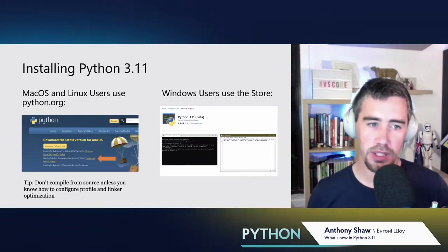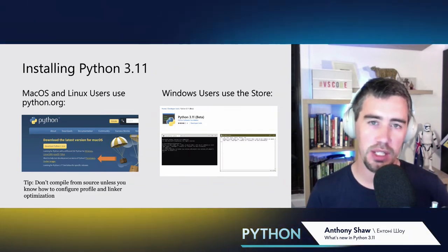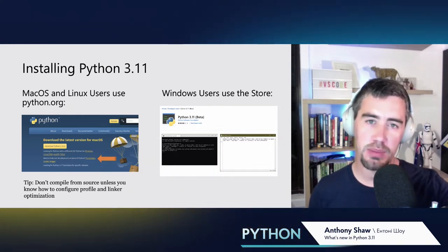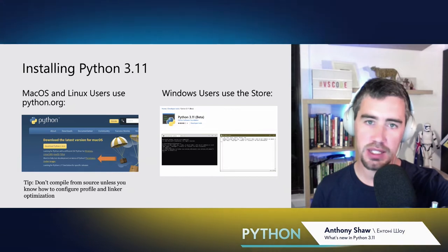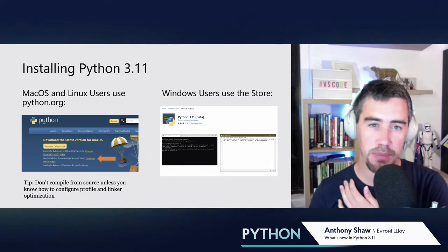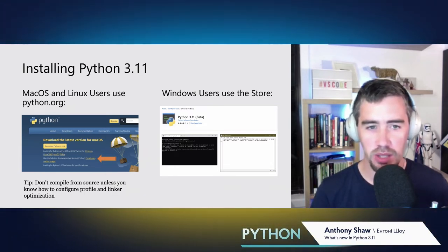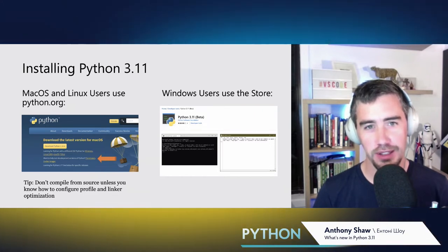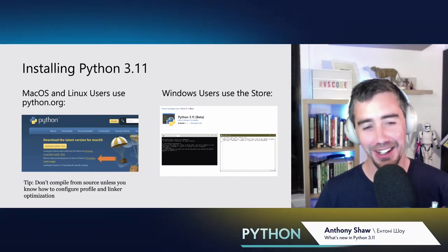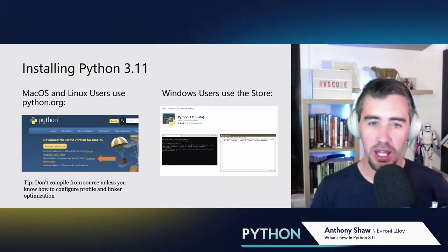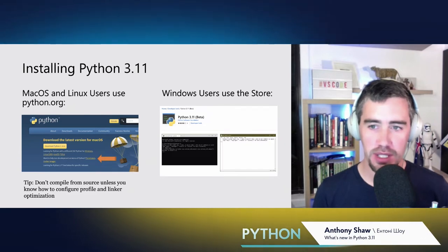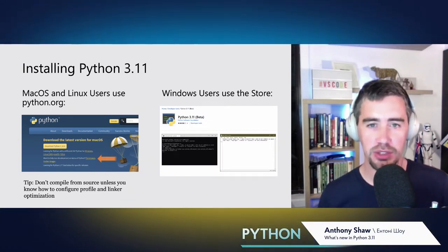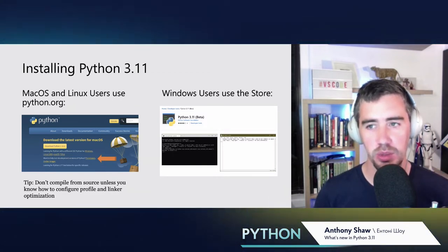If you want to get started with Python 3.11, depending on where you're installing it, there are a couple of recommendations. On Mac OS or Linux, get a copy from Python.org and go to the downloads page — there's a link that says pre-releases. Beta one is the current version but beta two comes out next week. I don't recommend installing from source unless you know how to configure link time compiling and profile guided optimization. Use the release builds on the Python.org website because they've been optimized already. If you're a Windows user, Python 3.11 is on the Windows Store and will update to newer versions automatically.